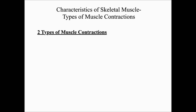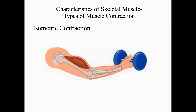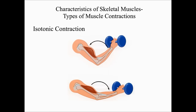Next, we talk about the types of muscle contractions — there are two types. The first type is called an isometric contraction, in which the tension in the muscle increases while the length of the muscle stays the same. The second type is called an isotonic contraction, in which the tension in the muscle increases while the length of the muscle changes. There are two types of isotonic contractions.